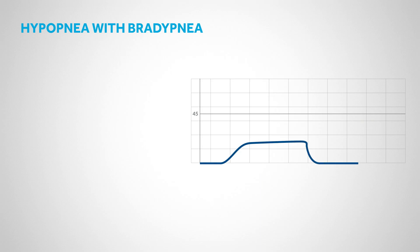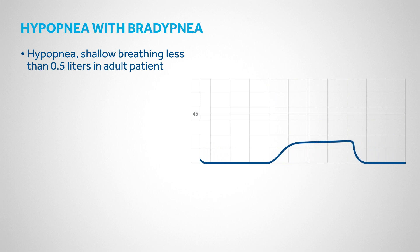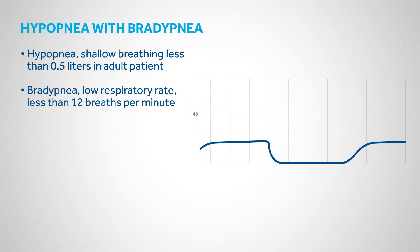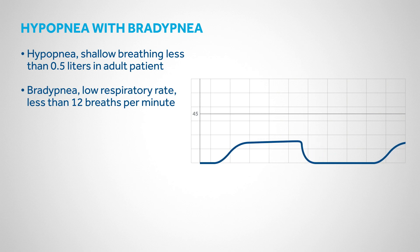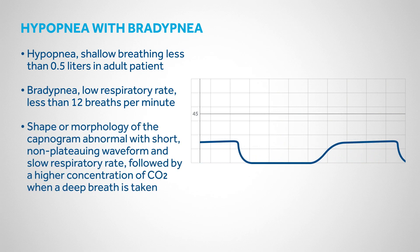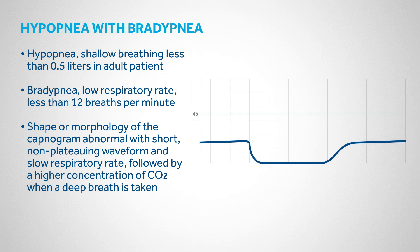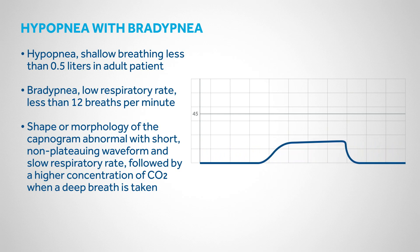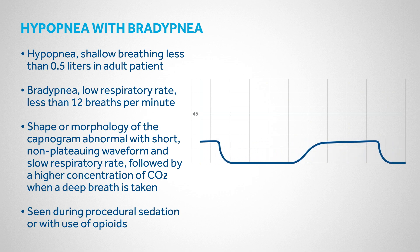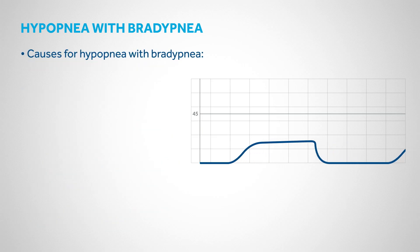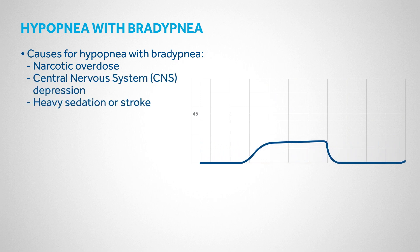Hypopnea — abnormally shallow breathing with tidal volume less than 0.5 liters in an adult — combined with bradypnea (generally less than 12 breaths per minute) produces an abnormal capnogram with short, non-plateauing waveforms and slow respiratory rate. This is often followed by a higher concentration of CO2 when a deep breath is taken, and is frequently seen during procedural sedation or with opioid use. Possible causes include narcotic overdose, central nervous system depression, heavy sedation, or stroke.